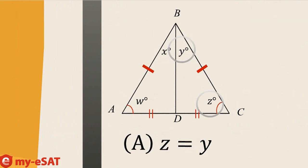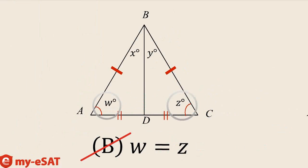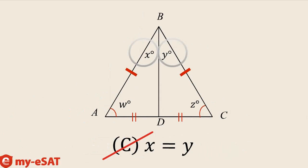Answer choice A: Z equals Y — can that be concluded from the information given? If Z were equal to Y, that would mean that BD is equal to DC, and we haven't been given any indication that that is the case. So let's leave answer choice A as a potential candidate. Answer choice B, W equals Z — we already concluded that that is true and marked it in our diagram, so we can eliminate answer choice B. Now C says X equals Y. X and Y are opposite AD and DC, which are equal to each other, so we know through the law of proportions that X must equal Y.